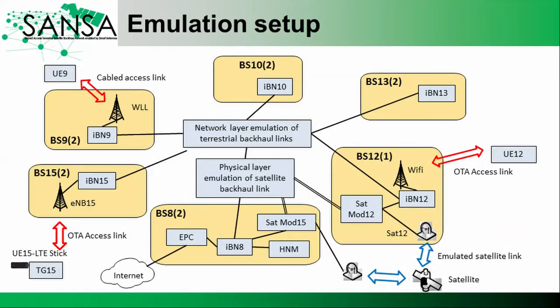In the emulation we imposed constraints on the number of simultaneous beams that the antenna arrays can create. The number of simultaneous beams is indicated behind the backhaul node number in brackets. For example, backhaul node number 10, referred to as BS10, can simultaneously communicate with two other neighboring backhaul nodes.